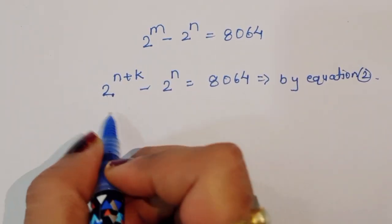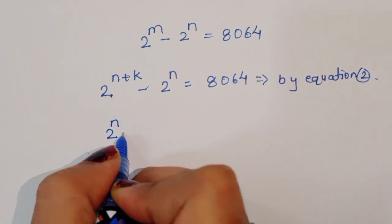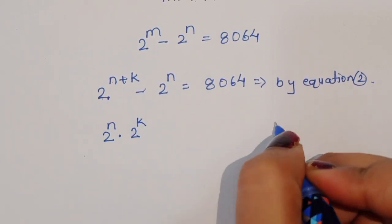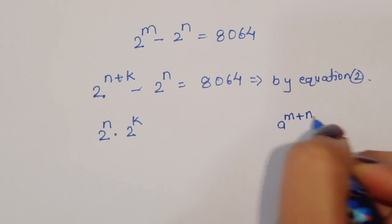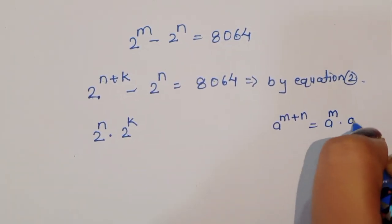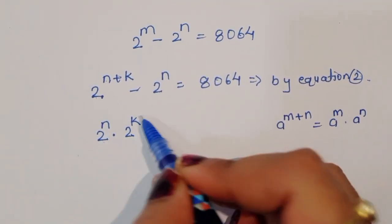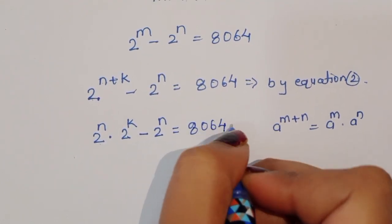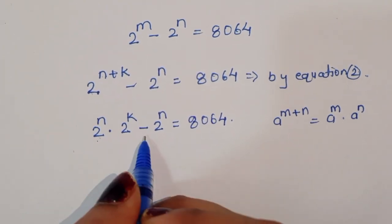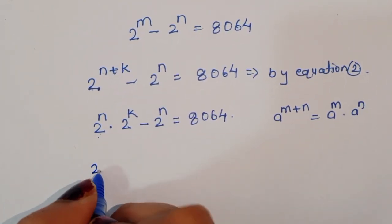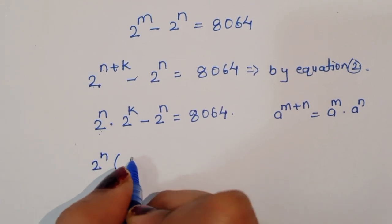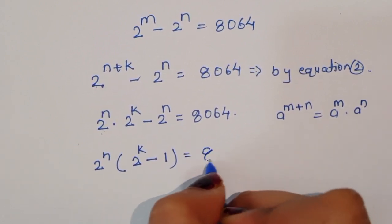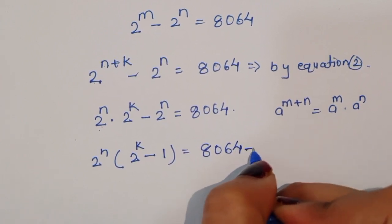We write 2 power n plus k, and using the formula a power m plus n equals a power m times a power n, we get 2 power n times 2 power k minus 2 power n equals 8064. Taking 2 power n as common, we get 2 power n times (2 power k minus 1) equals 8064. This is equation 3.